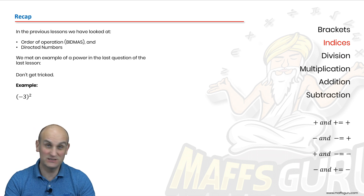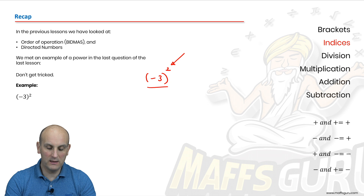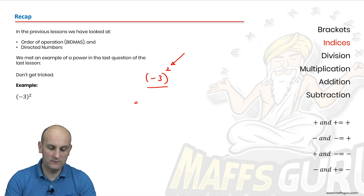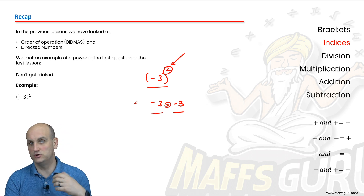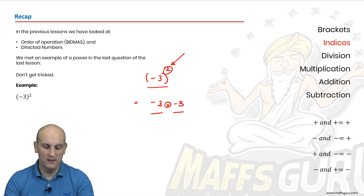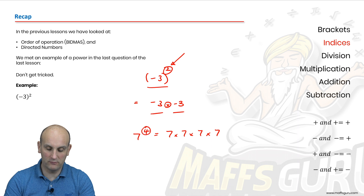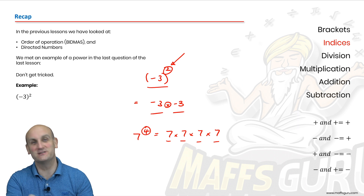It's actually called an exponent, but ultimately when I have minus three with a floaty two, that floaty two tells me I'm going to multiply what it's attached to by itself that many times. So floaty two is the same as writing minus three times minus three — I wrote it twice because the floaty two told me to do it twice. For example, seven to the power of four is seven times seven times seven times seven — four of them, all separated by times signs.